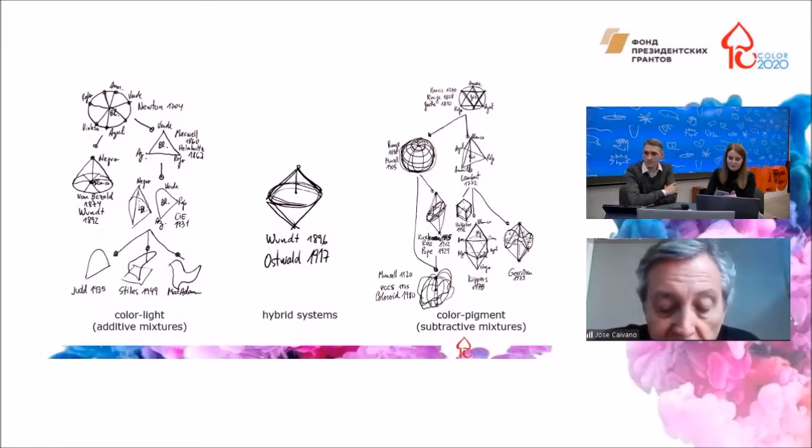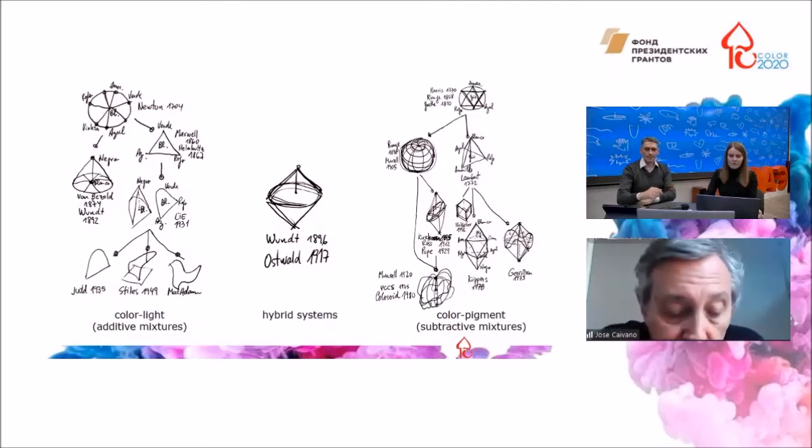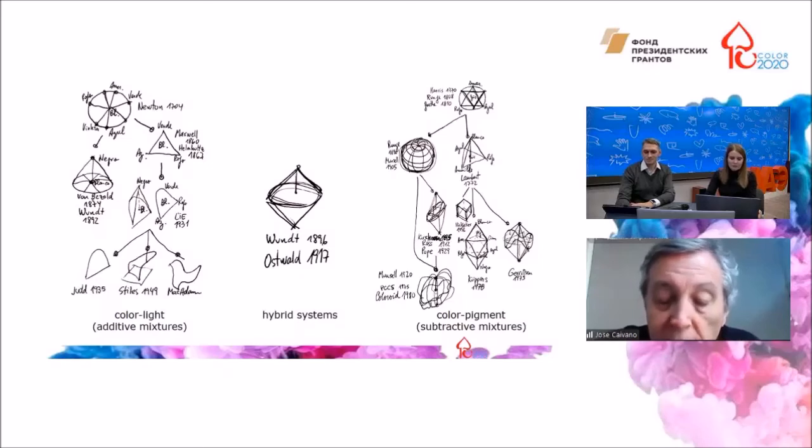However, some models exhibit a certain ambiguity. They can be regarded as somehow hybrid systems or intermediate steps representing other cases of color mixtures, since sometimes it is difficult to draw a clear separation between additive, partitive, and subtractive mixture.